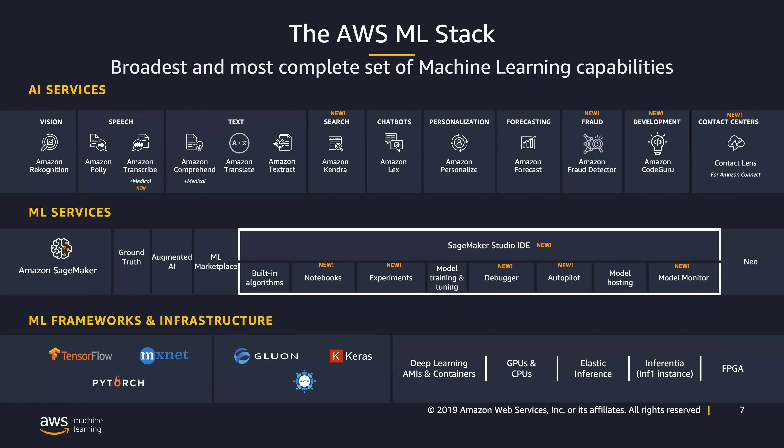We're going to go from the top to the bottom of the slide. On top, we have our AI services — these are services that any developer can take advantage of, whether you have machine learning expertise or not. A lot of these are models we've created and trained internally at Amazon.com or AWS, and we've opened them up to developers as APIs. One layer lower are the ML services, which fall underneath the Amazon SageMaker umbrella, and we'll go over a couple of those in a bit.